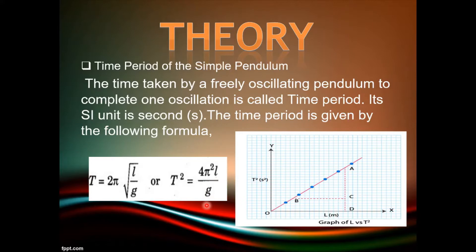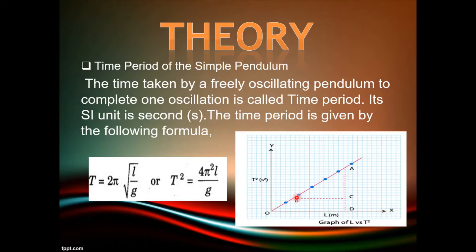By squaring both sides, we will get this expression. From the expression, it is very clear that T² is directly proportional to L, as 4π²/G is a constant value. So when the graph is plotted between L versus T², taking T² along the y-axis and L along the x-axis, the graph comes out to be a straight line passing through the origin.